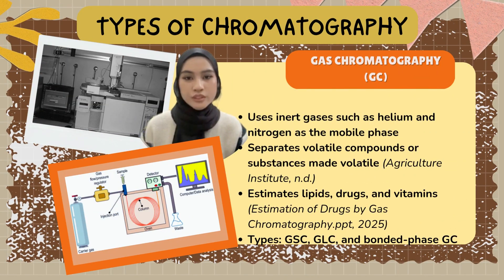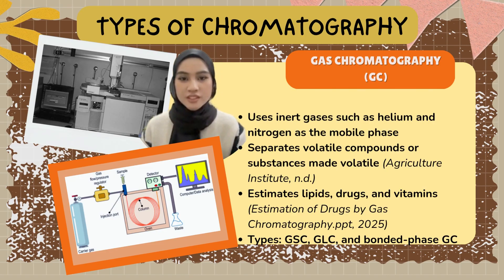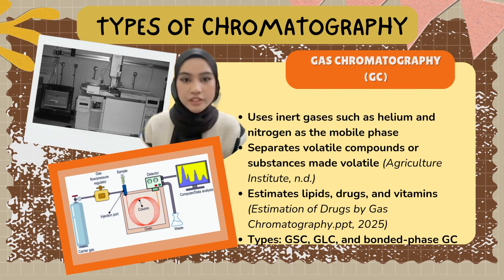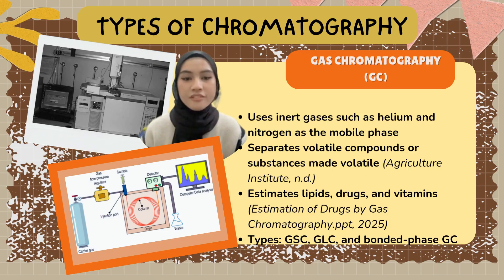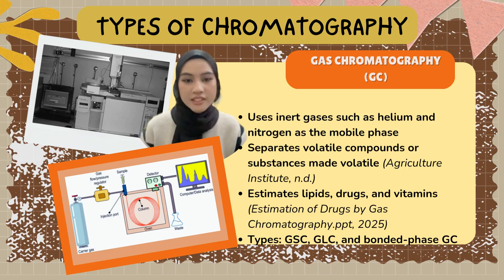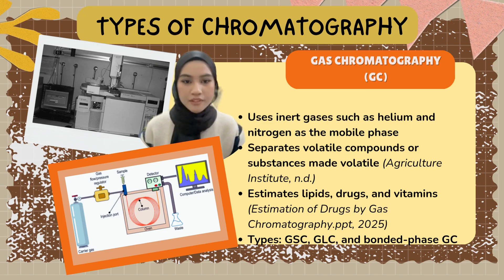Next, we move on to gas chromatography, or GC. GC uses inert gases like helium and nitrogen as the mobile phase. It's suitable for separating volatile compounds, or substances that can be turned into a gas. GC is often used to estimate things like lipids, drugs, and vitamins. There are different types such as gas solid chromatography (GSC), gas liquid chromatography (GLC), and bonded-phase gas chromatography.